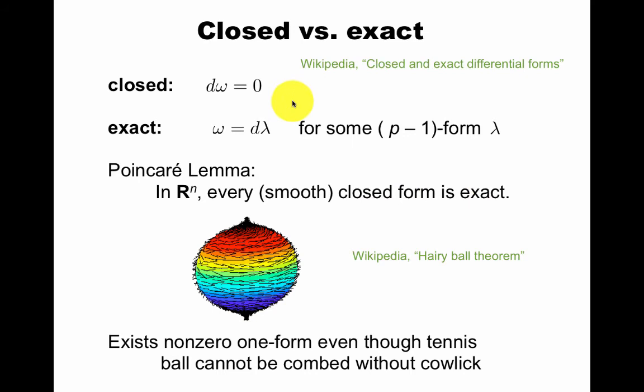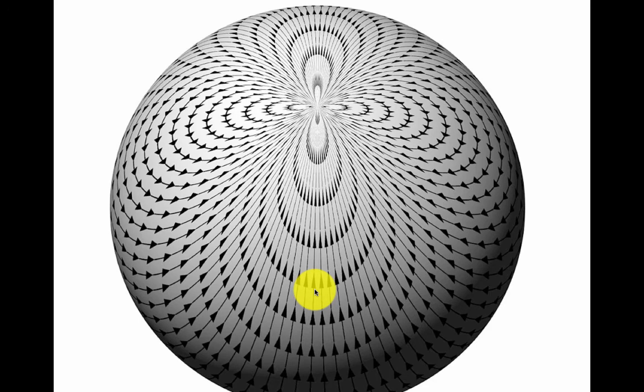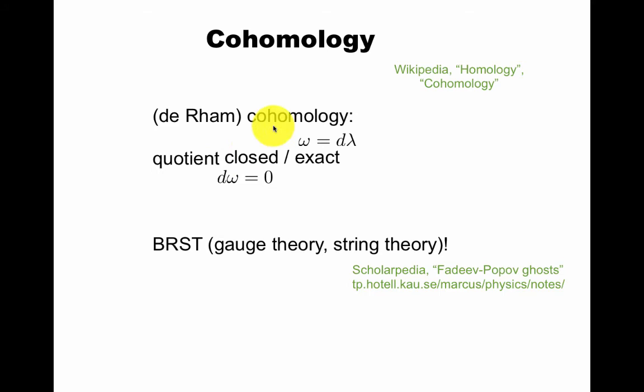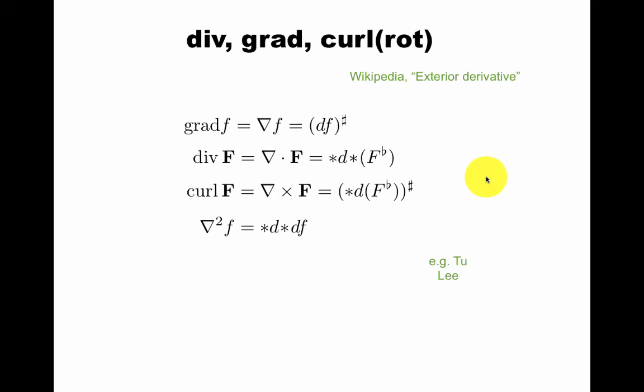The Poincare Lemma says, in fact, that in R^n, every closed form is exact. So then the difference is not very interesting. But already on the sphere, these things start getting more interesting. Here's another way to comb a sphere. In fact, you can define the de Rham cohomology, which is quotient of closed with exact. We said that in R^n, this is kind of boring. But in general, in more interesting topological spaces, this could be interesting. Amazingly, this is relevant in physics. The so-called BRST method to quantize gauge theory and string theory started with the DeWitt-Faddeev-Popov method. Read more about that here.